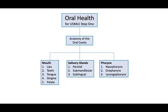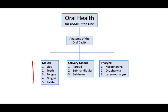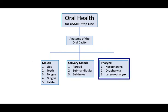In our anatomy overview, we will specifically discuss the anatomy of the mouth, salivary glands, and pharynx. We'll go through the anatomy of the mouth in the sequence that you encounter during an oral exam. Included within the mouth are the lips, teeth, tongue, gingiva or gums, and palate. The three salivary glands include the parotid, submandibular, and sublingual. The pharynx includes the nasopharynx, oropharynx, and laryngopharynx, though we will stay focused on the oropharynx, mentioning the nasopharynx and laryngopharynx only for completeness.